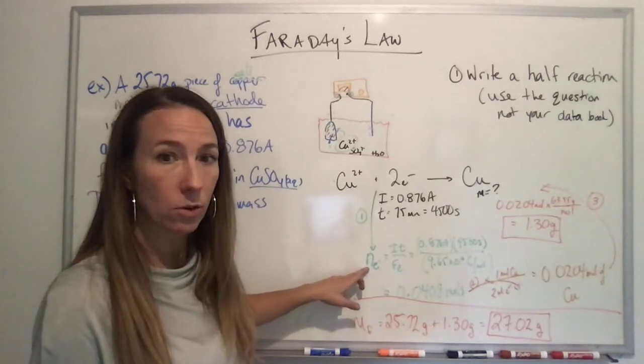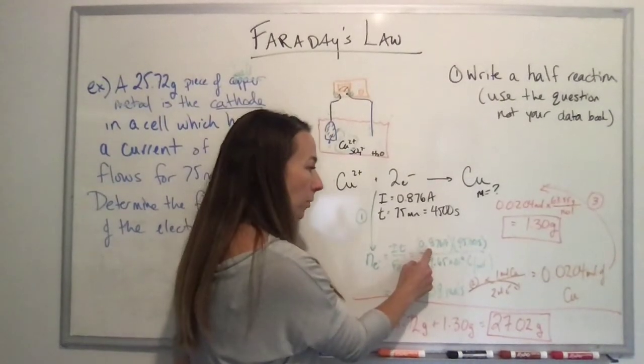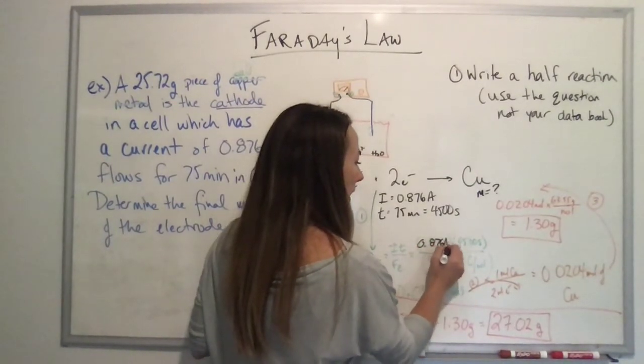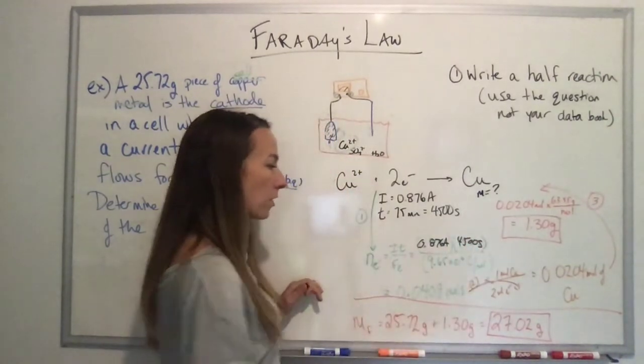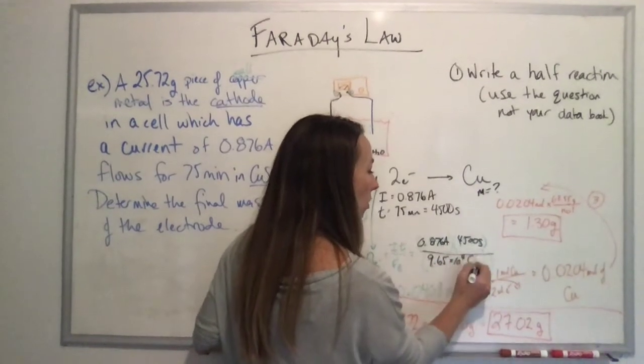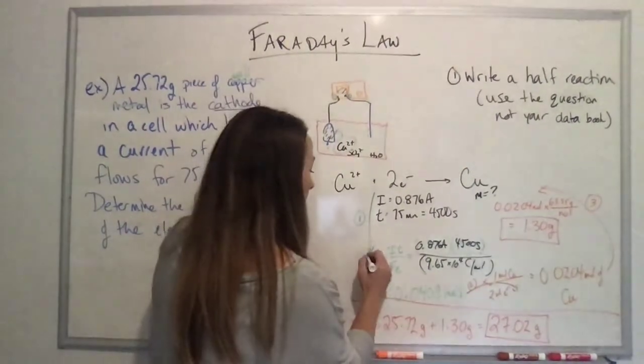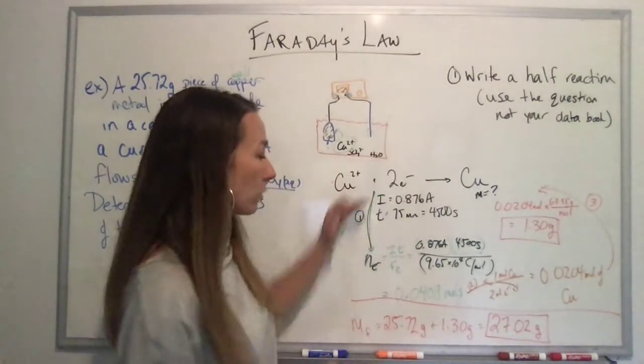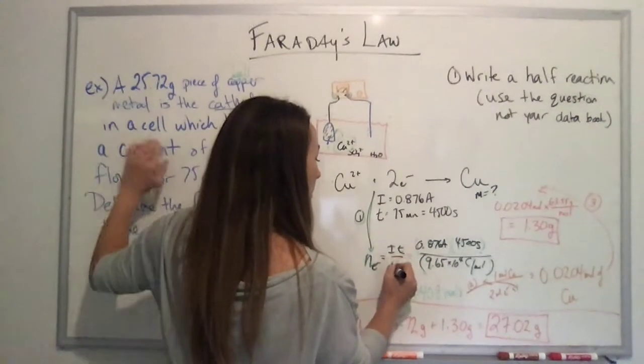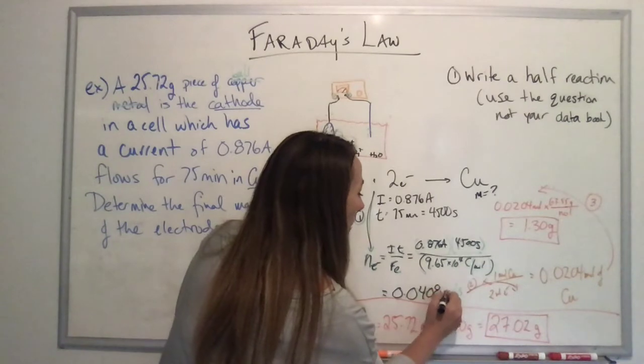The current and the time has to do with the electrons. So first of all I write a half reaction, there's my half reaction. Then I put the information underneath: here's my current, here's my time in my electron column, and I want to know how much mass of copper I'm going to make in this column. My number of moles of electrons is going to be I times t, I times t divided by F_e.